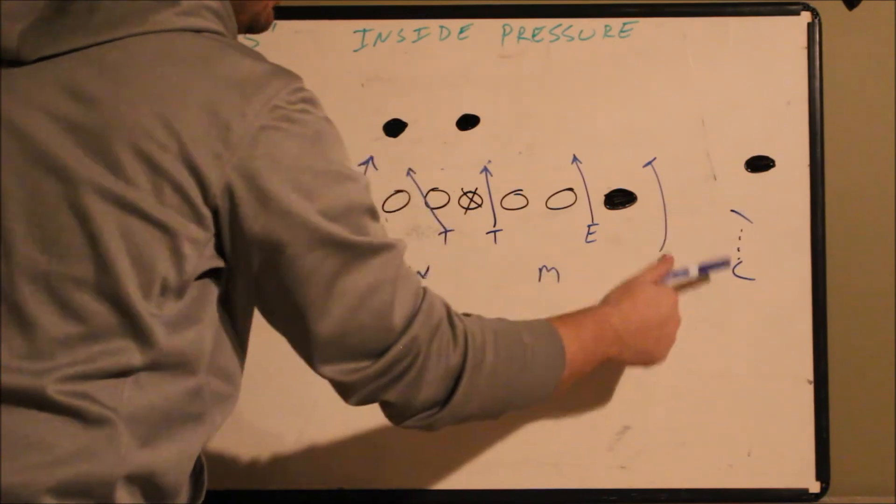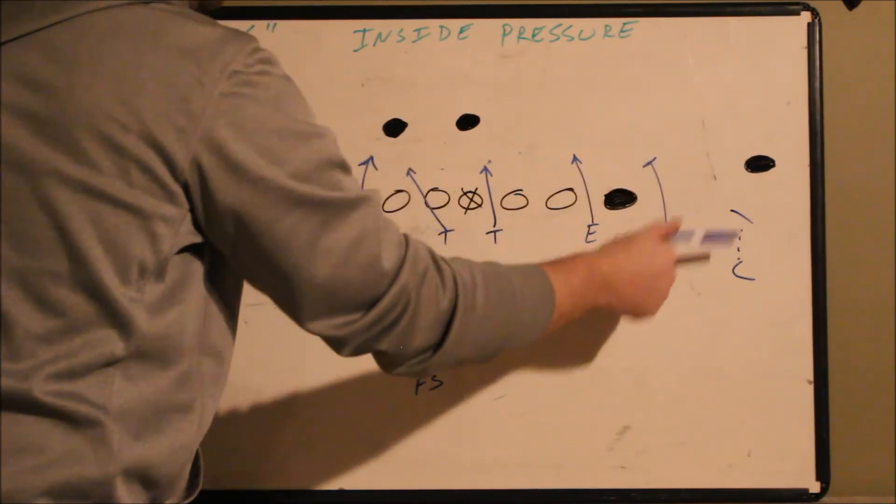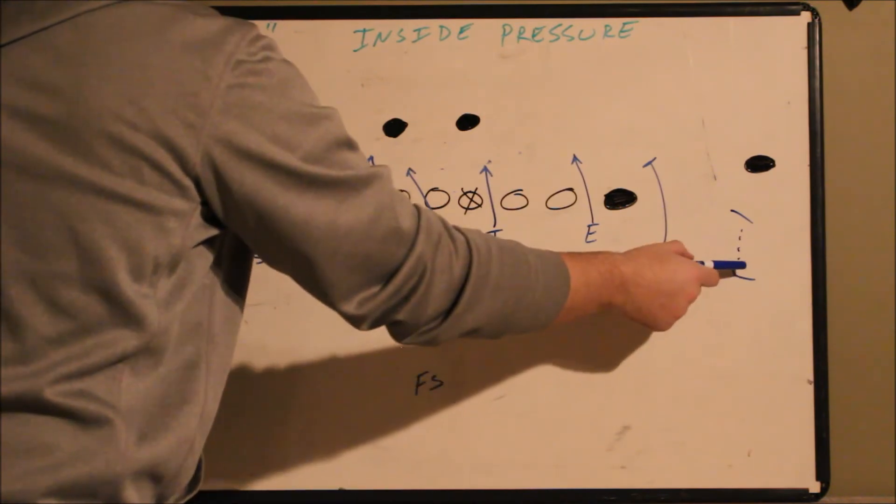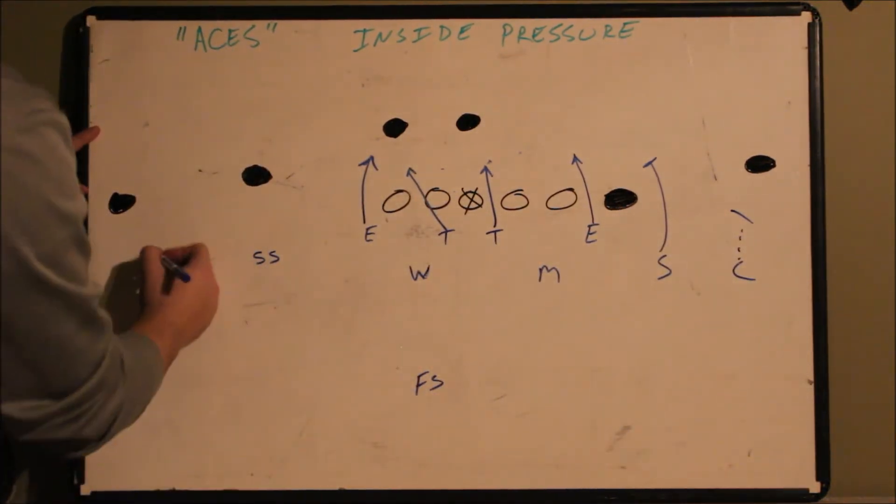This corner is locked up on that receiver man to man. He must maintain inside leverage. Do not allow any inside releases. You could have him up and press or you could have him off giving some cushion. Same thing with this corner.